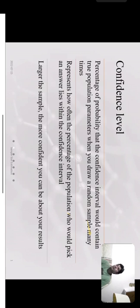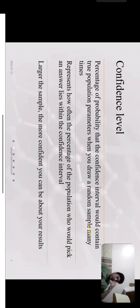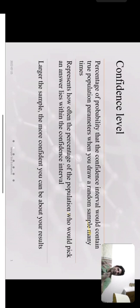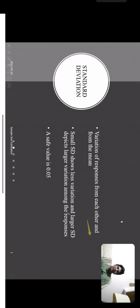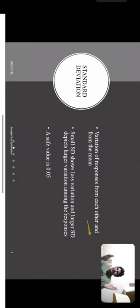The larger the sample size, the more confident you can be about your results when generalizing to the population. If your sample size is too low, your results will not be valid for generalization. Standard deviation is the variation of responses — a smaller standard deviation means less variation, while a larger standard deviation means more variation among participant responses. On a safer side, we set it at 0.5.